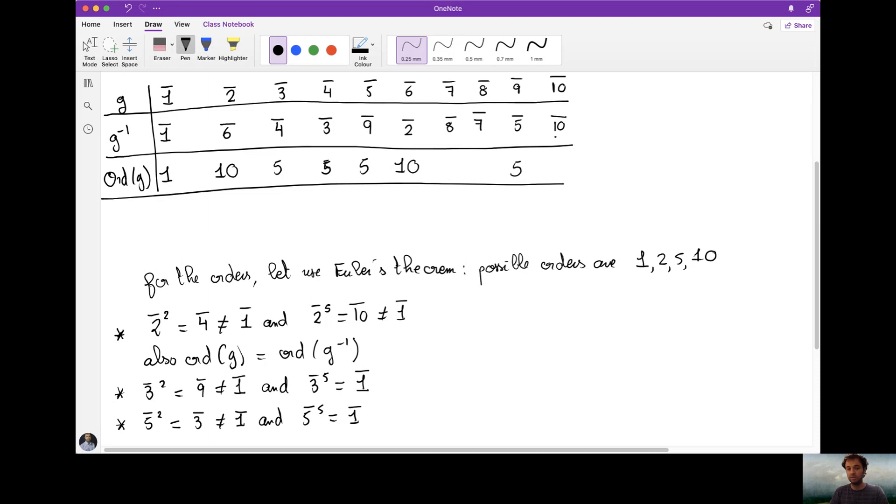The order of 10 is obvious, as we said, because it's its own inverse, so 10 to the power 2 is 1. So here we have 2. And for 7 and 8, maybe we can be smart about it, because 7 is in fact the same as minus 4. And we know how it works, or maybe we can do 8 if you want. 8 is the same as minus 3, and we know the powers of 3, and therefore 8 to the power 5 is equal to minus 3 to the power 5, which is minus 1. So it has to be the case which is not 1, so the order of 8 is also 10, and therefore the order of its inverse is also 10.